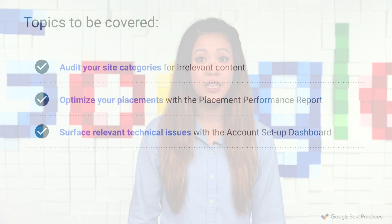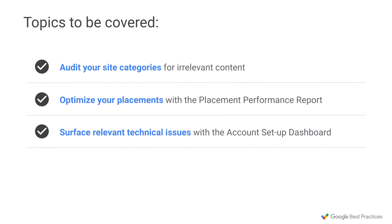I'll be covering three things. First, audit your site categories for irrelevant content. Second, optimize your placements with the placement performance report. Third, surface relevant technical issues with the account setup dashboard.